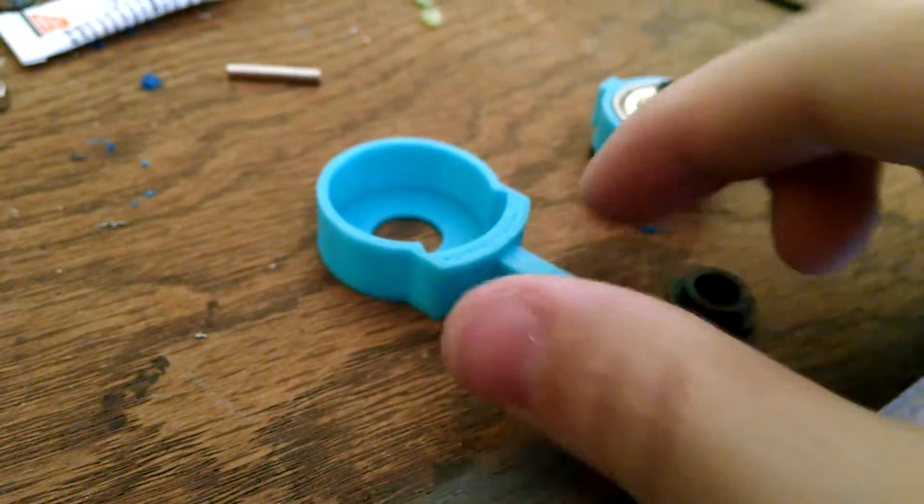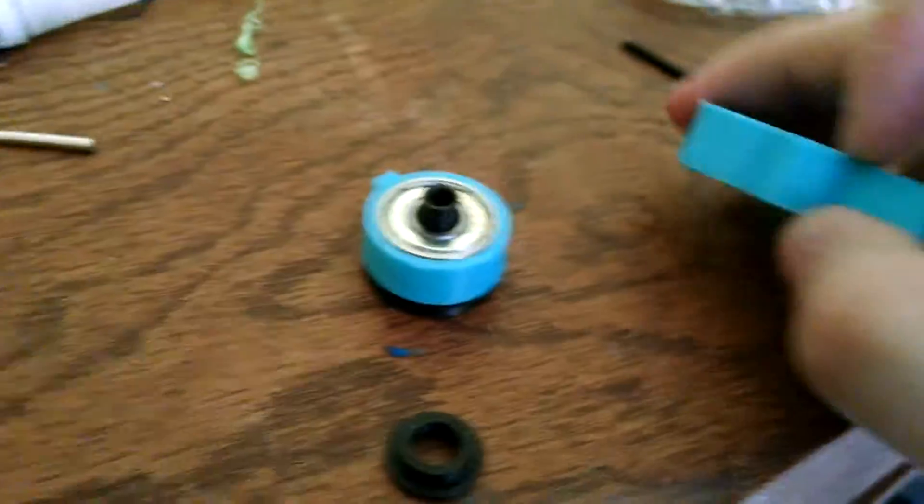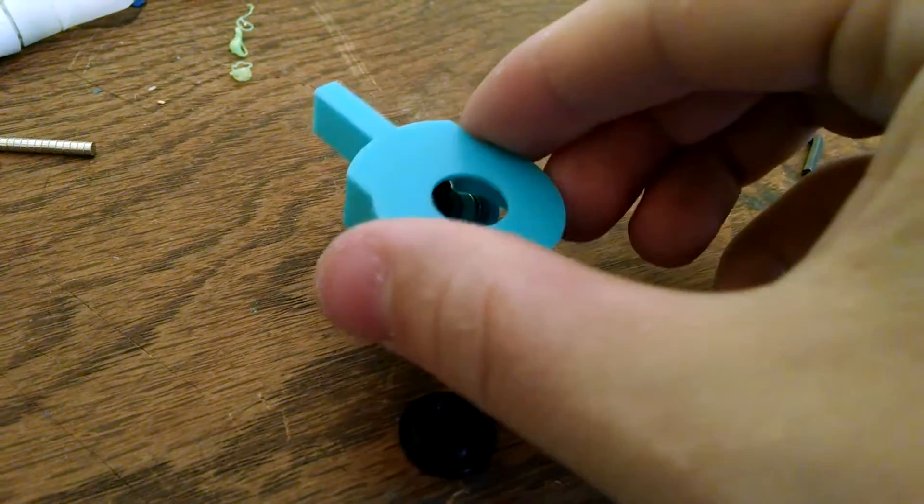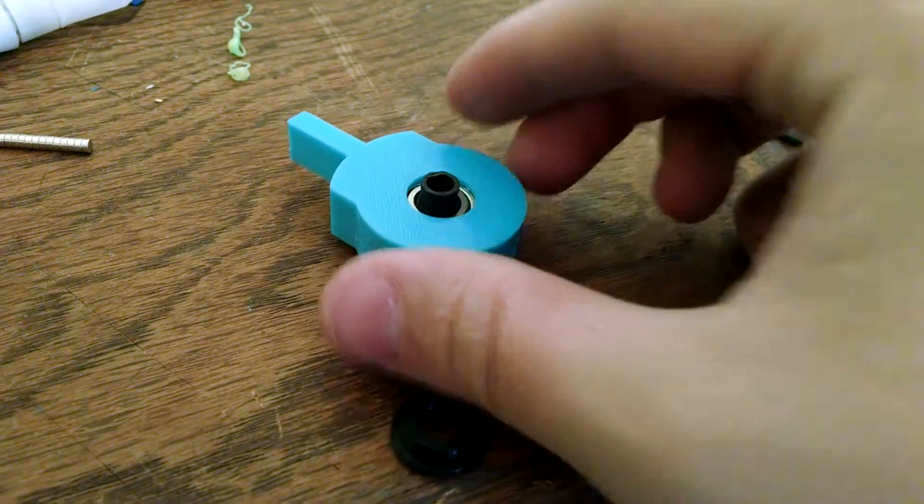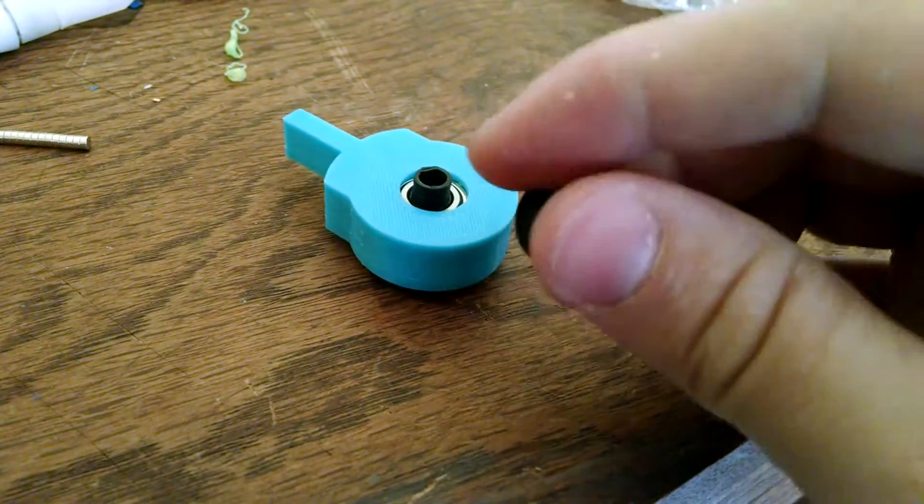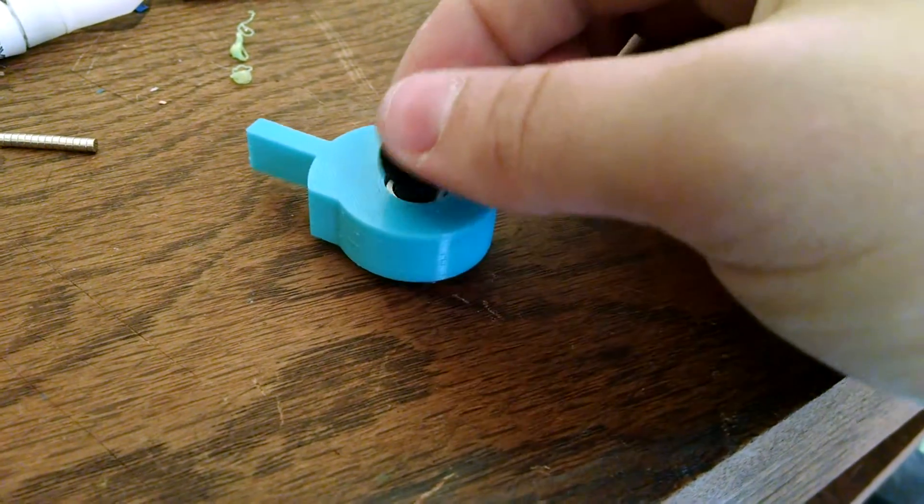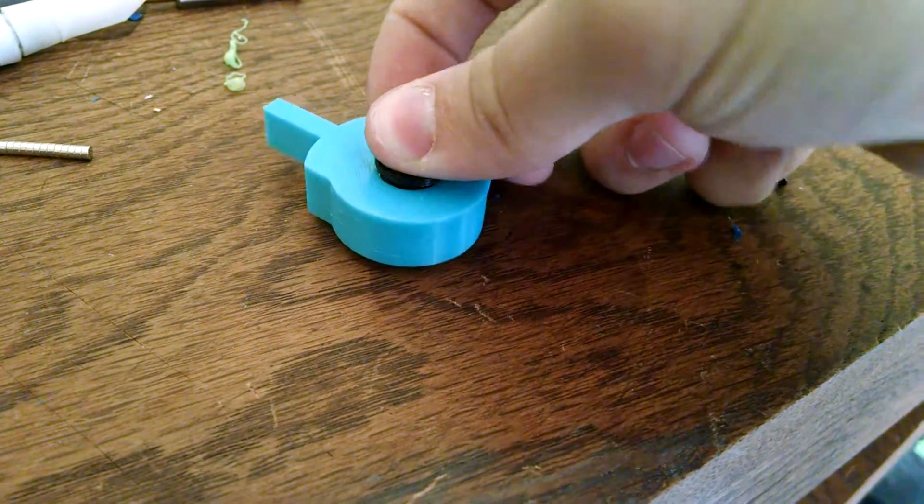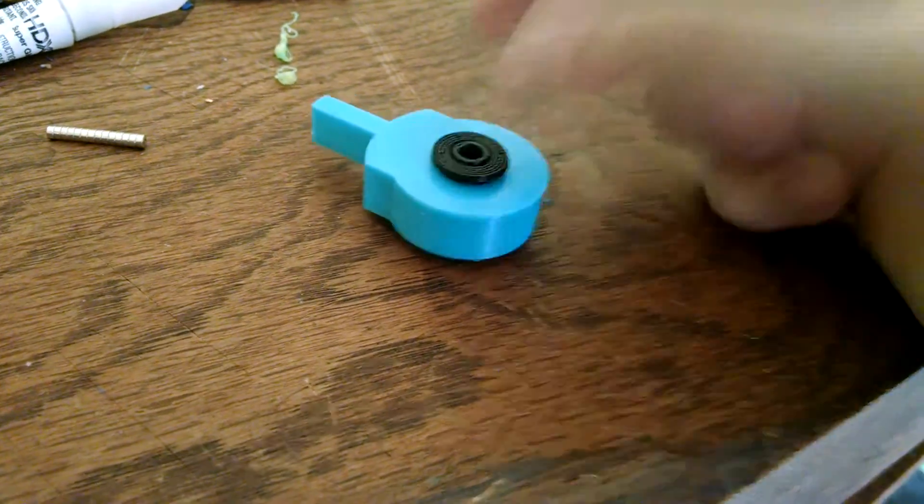So then this piece goes on the outside, so you can see the slot goes on the outside like that. And then this little spacer goes right here, like that.